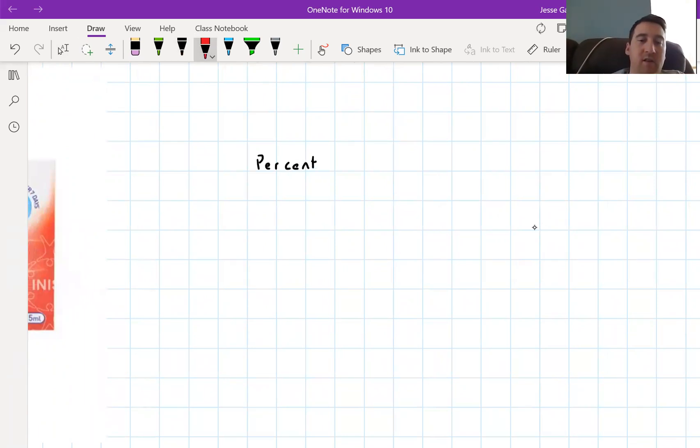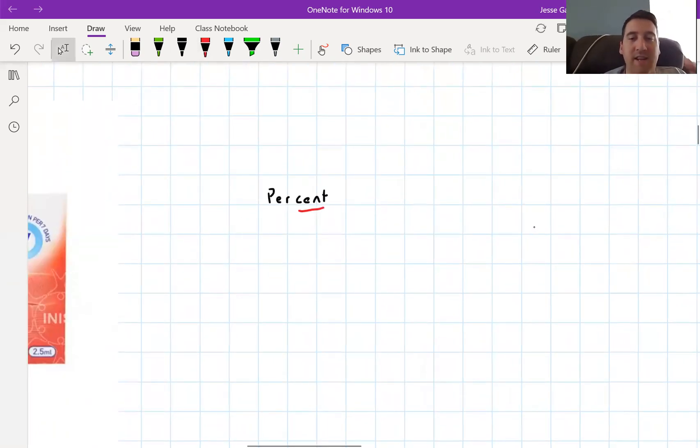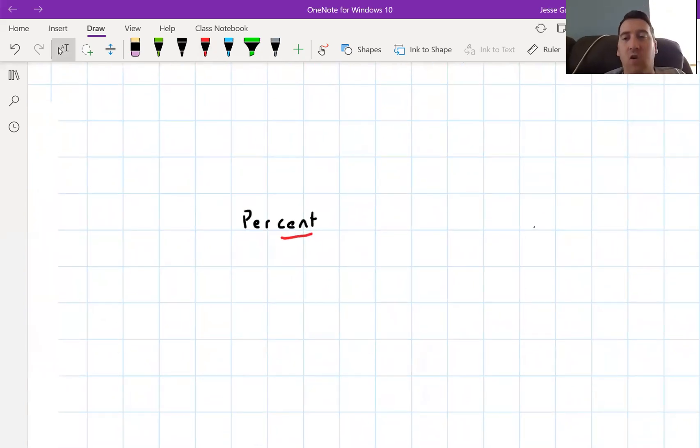First of all, the word cent - we know this from money because we have cents and euros. There's a hundred cents in a euro. The word cent also gives us century, which means a hundred years. So cent basically means hundred, related to the word hundred. Per, of course, kind of means out of. So out of a hundred.